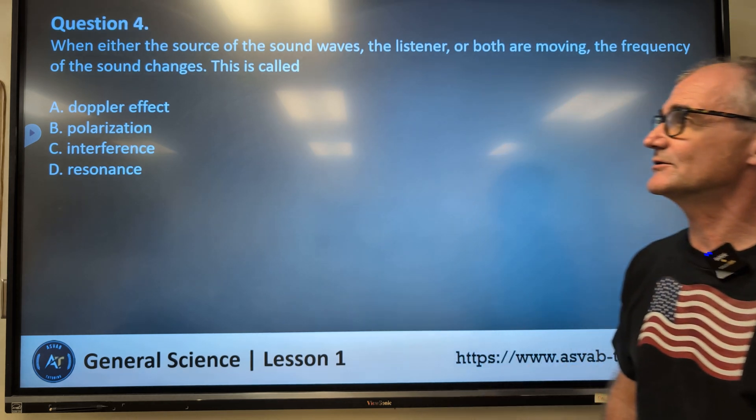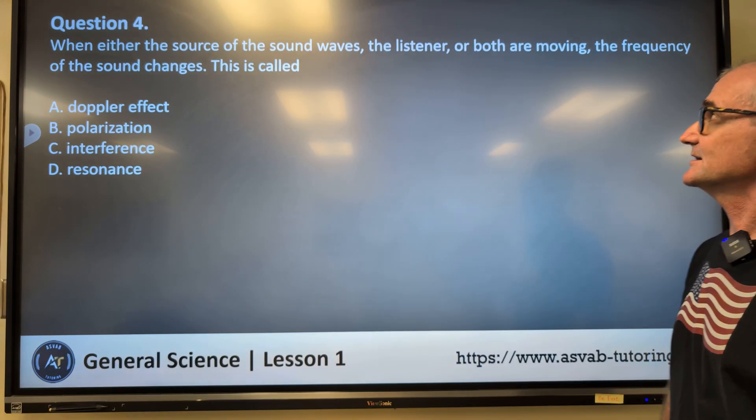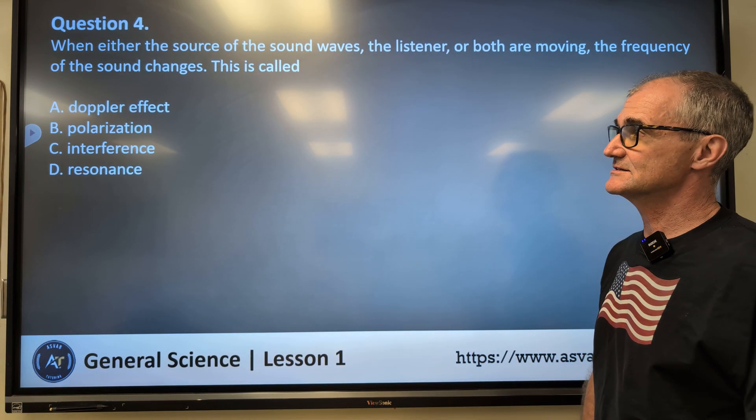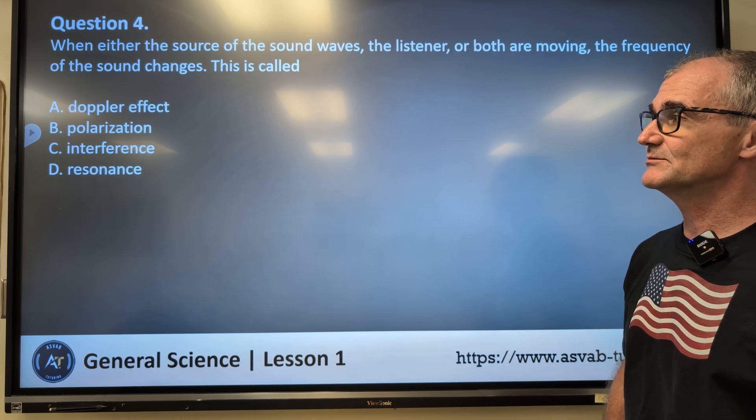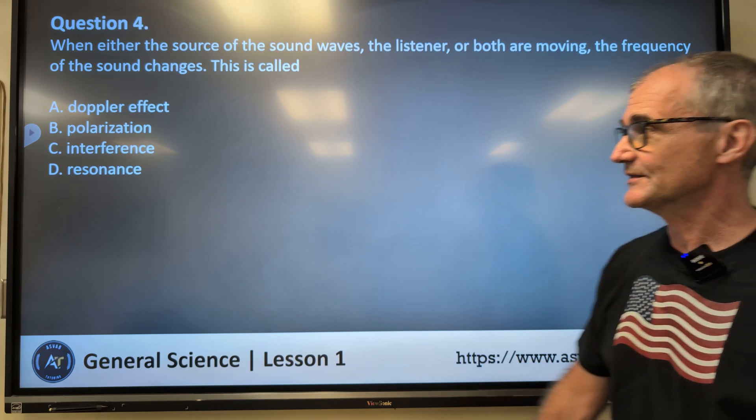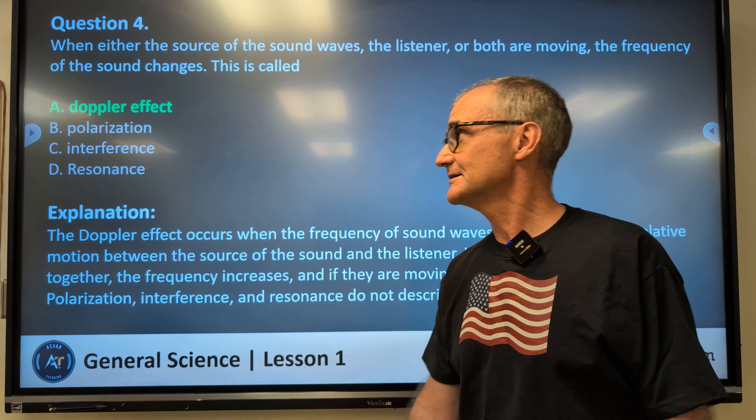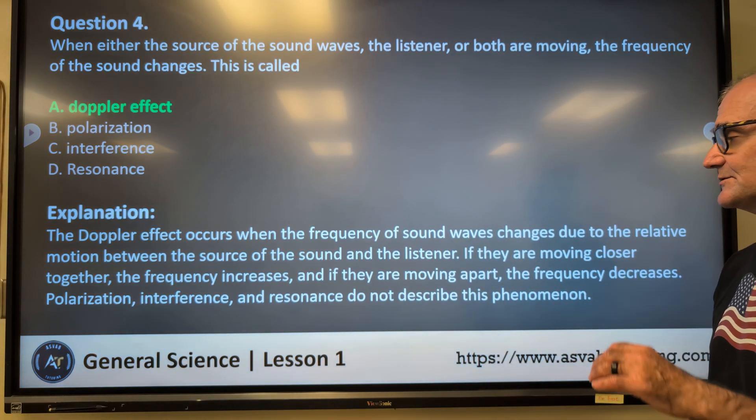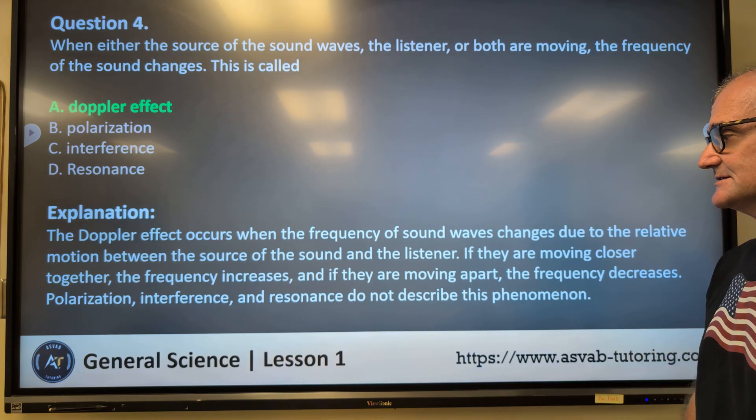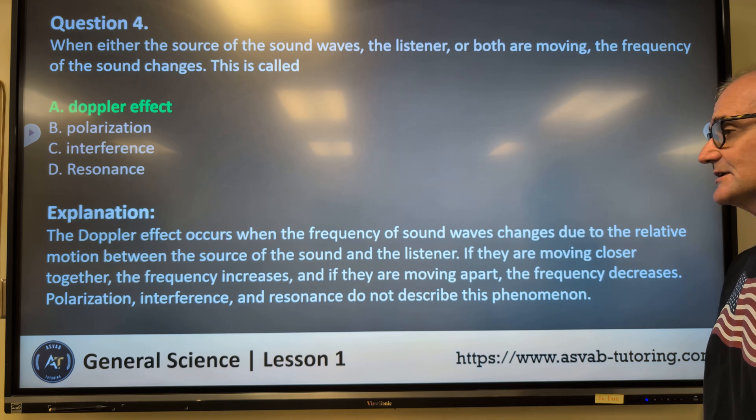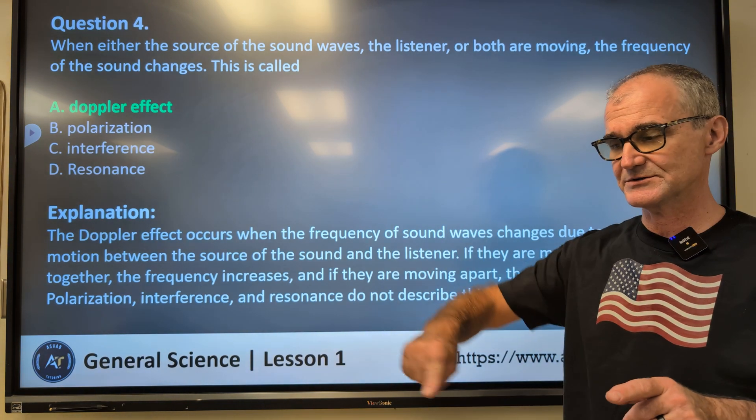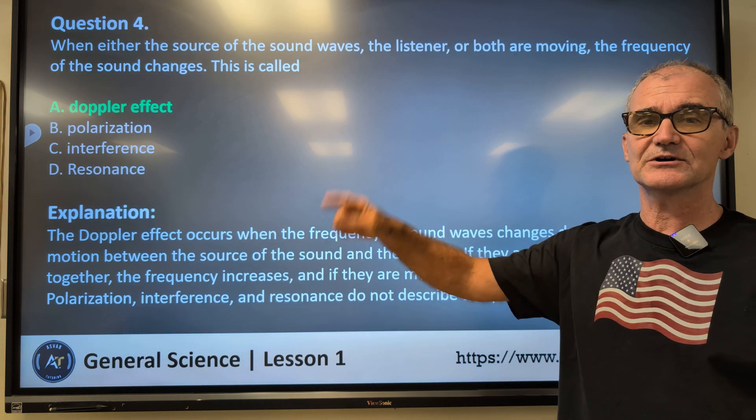Question number four. When either the source of the sound waves, the listener, or both are moving, the frequency of the sound changes. This is called A, Doppler effect, B, polarization, C, interference, D, resonance. Correct answer A, Doppler effect. The Doppler effect occurs when the frequency of the sound wave changes due to the relative motion between the source of the sound and the listener. If they are moving closer together, the frequency increases, and if they are moving further apart, the frequency decreases. Remember, sound travels in a wave very similar to alternating current.